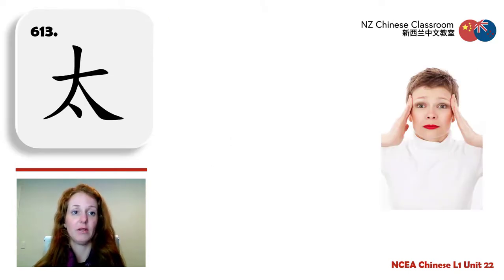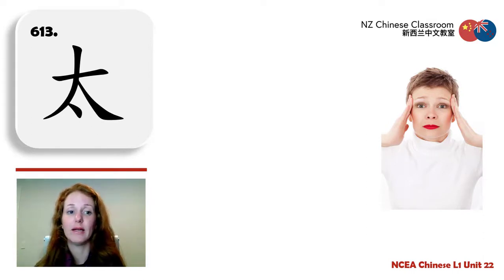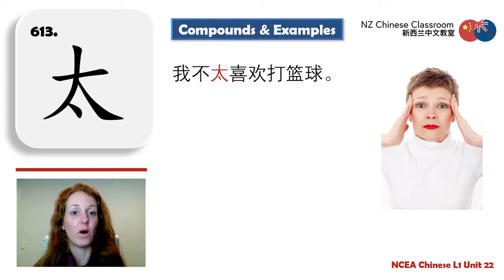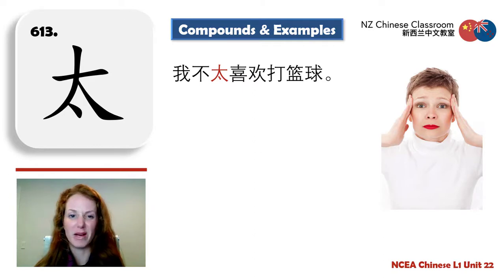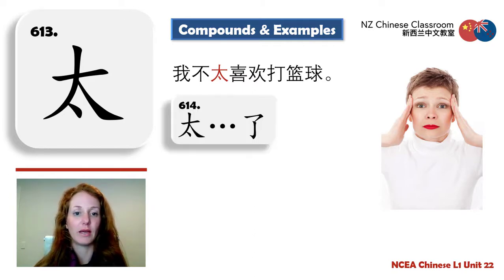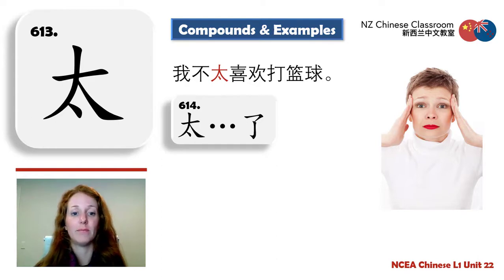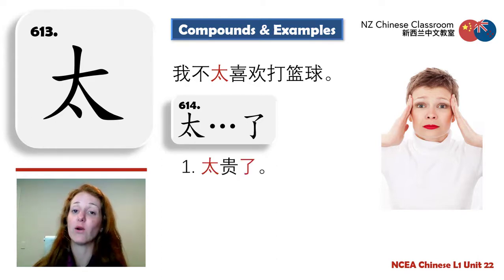太 — this is like 'extreme,' like 't-o-o' double O. It looks like 大 but with a little extra stroke. Example: 我不太喜欢打篮球 — I don't like playing basketball that much. The structure 太...了 means 'to the extreme.' Example: 太贵了 — too expensive.